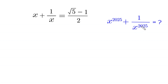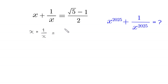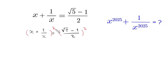Let's start. First we find the value of x squared plus 1 over x squared. We take the square of both sides of the equation: x plus 1 over x is equal to (√5 minus 1) divided by 2.